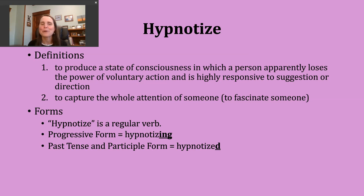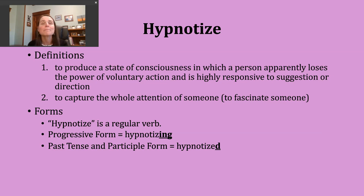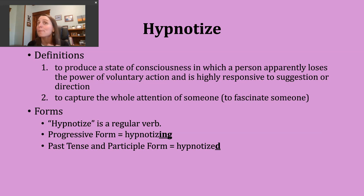You should know that hypnotize is a regular verb. To make the progressive form, notice that this verb ends in the pattern vowel-consonant-e. That means we drop the e before adding a suffix that starts with a vowel letter. So we add -ing, which forms hypnotizing.